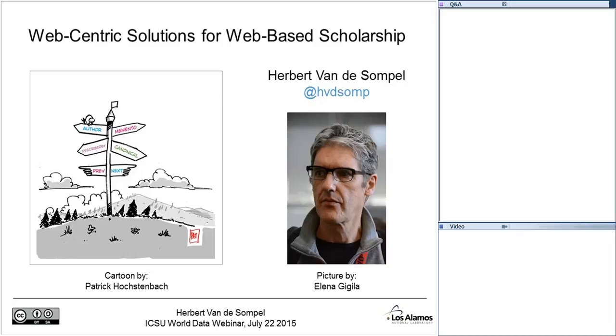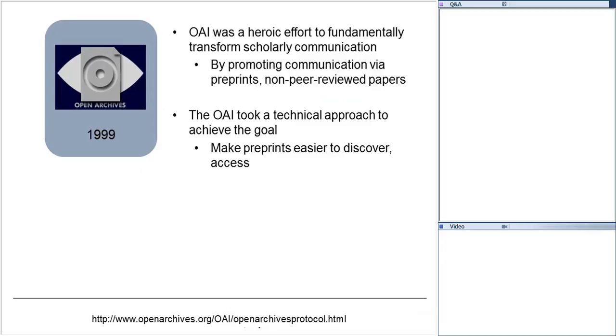I'm going to start my story around 1999 with the creation of the Open Archives Initiative Protocol for Metadata Harvesting, OAI-PMH in short. So the OAI was heroic, you could also say naive effort to try and fundamentally transform scholarly communication. And the way we were going to go about that was by promoting communication via preprints, so non-peer-reviewed free papers. And the idea was that peer review if necessary was going to be provided in a layer on top of that free literature. And OAI took a technical approach to achieve that goal. The goal was going to be to make preprints easier to discover and access. And in doing that, they would actually be able to compete with established journal literature. Yes, as I said, it was all rather naive. We were still young in those days.